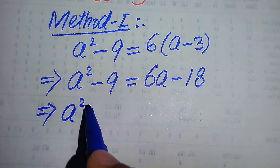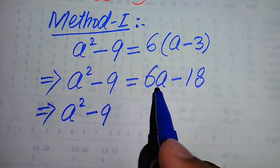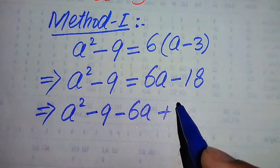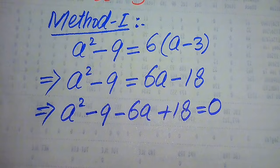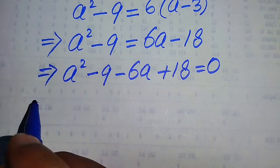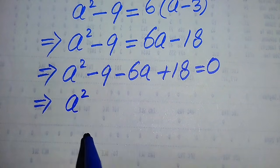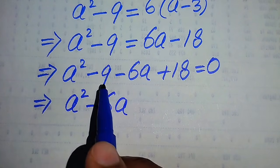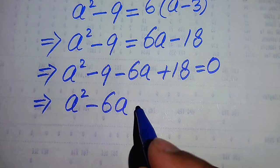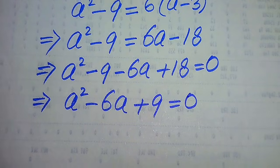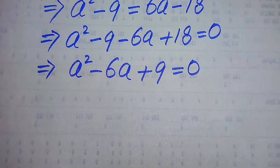In the next step we move all terms from the right hand side to the left hand side. It becomes a² minus 9 minus 6a plus 18 equals 0. Adding and subtracting like terms, we get a² minus 6a, and minus 9 plus 18 becomes plus 9, equals 0. This equation is now in quadratic form.